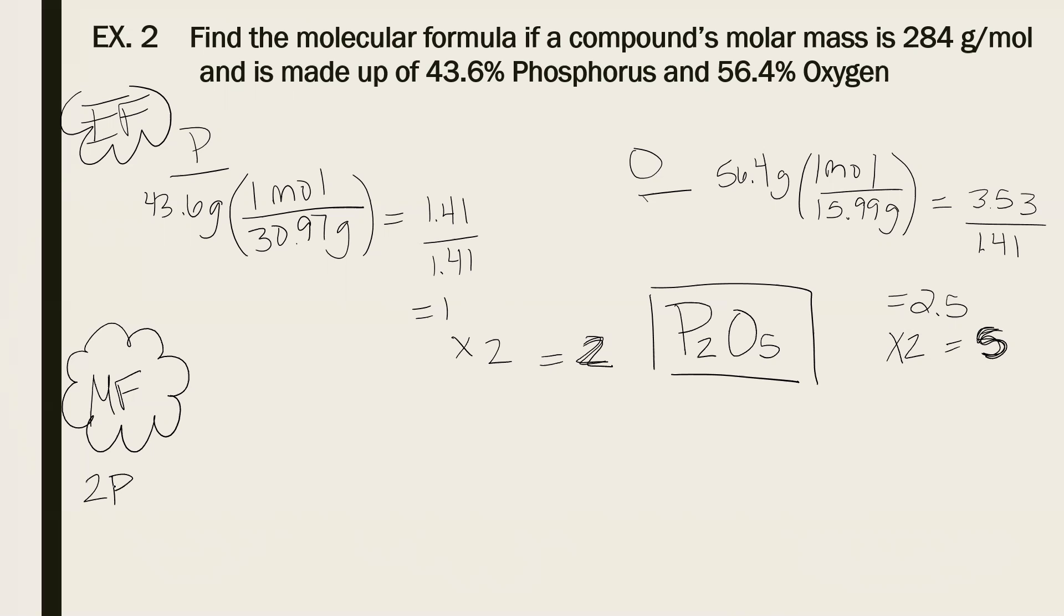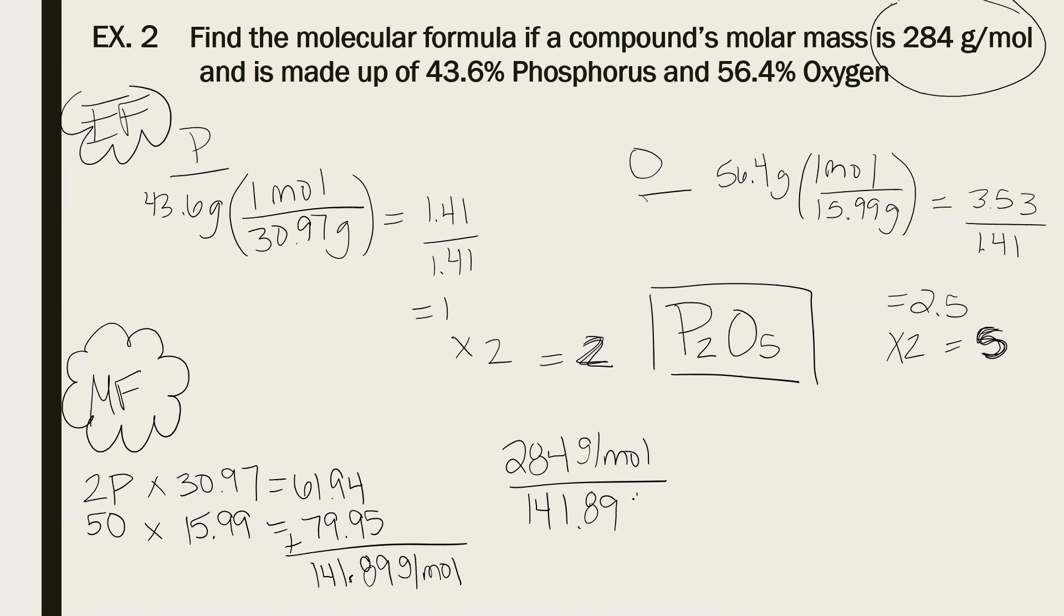So the first step is to find the molar mass of the empirical. Add everything together, 2 phosphorus and 5 oxygen. I get 141.89 grams per mole. The problem gives me the molecular formula molar mass 284.